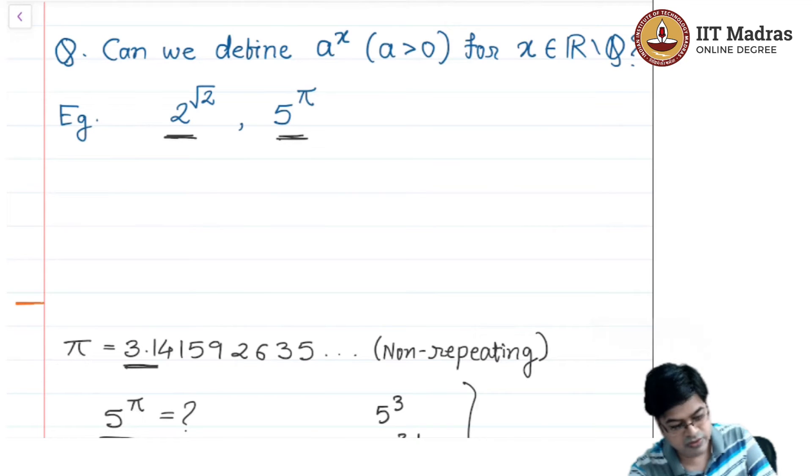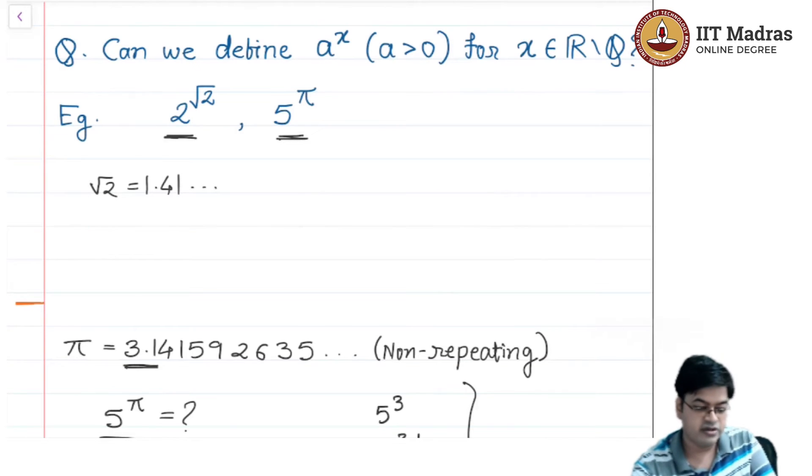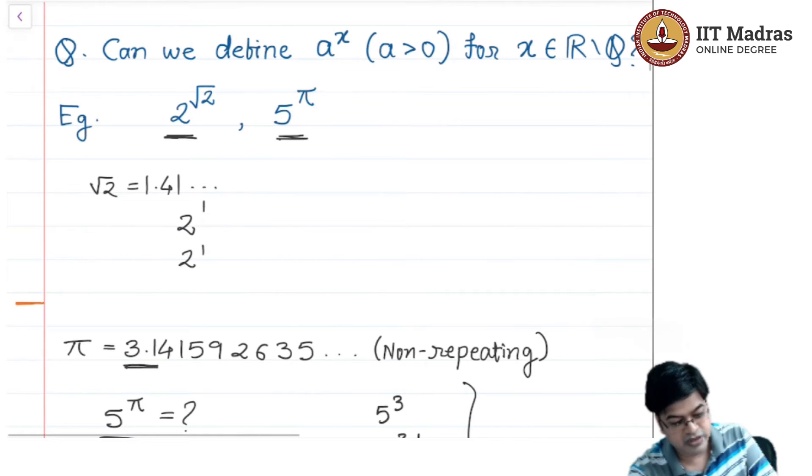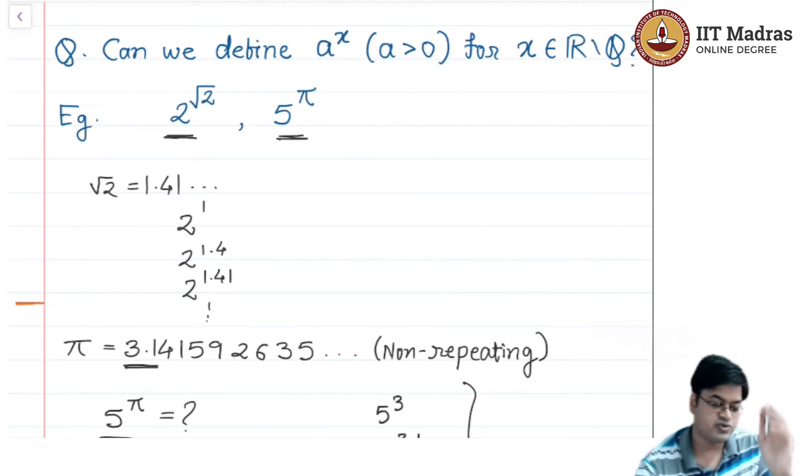In a similar manner, you can do an exercise for 2 root 2. Root 2 is actually 1.41 and something. Again, you will go with 2 raised to 1 is defined, 2 raised to 1.4 is defined, 2 raised to 1.41 is defined, and so on, and you will reach somewhere, that is 2 raised to root 2.